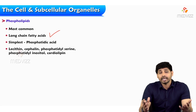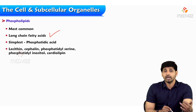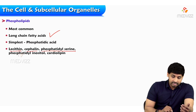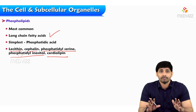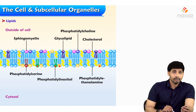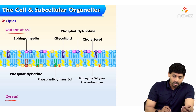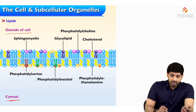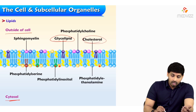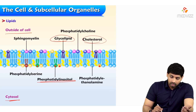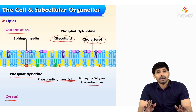The simplest phospholipid is phosphatidic acid. Examples of phospholipids include lecithin, cephalin, phosphatidylserine, phosphatidylinositol, and cardiolipin — all examples of glycerophospholipids, with glycerol as the main alcohol. Sphingomyelin is also present. A glycolipid refers to a lipid attached to a carbohydrate, and the picture shows the outside and cytosolic side of the cell.